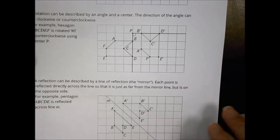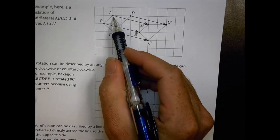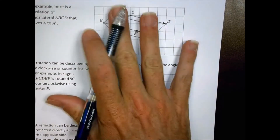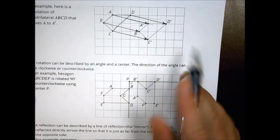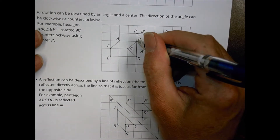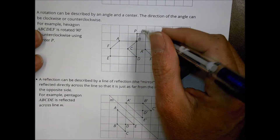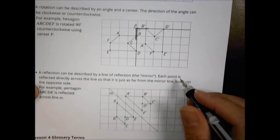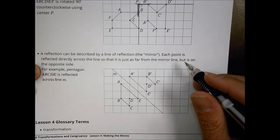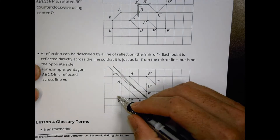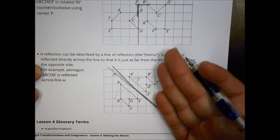A translation moves a shape that stays the same — same shape, same size — it's just sliding. A rotation takes a point, rotates the shape around it, and makes a new angle; you can use your protractor to find that angle. A reflection takes a line, and you flip the shape over that line to get the mirror image.